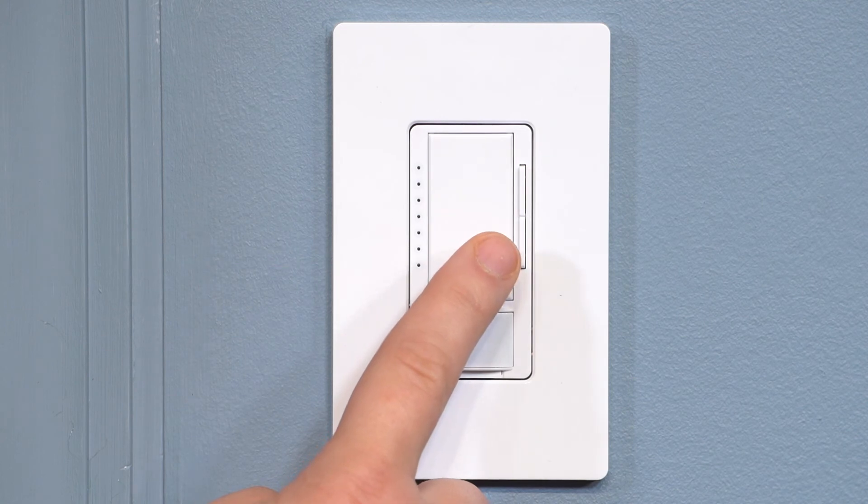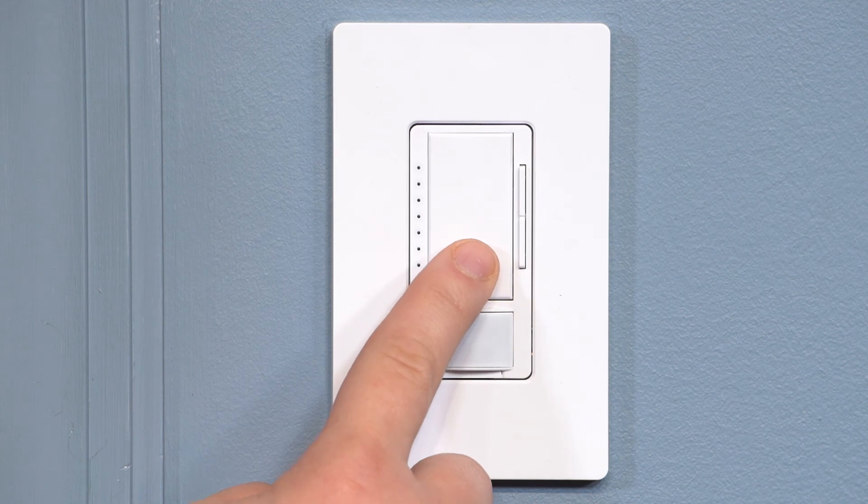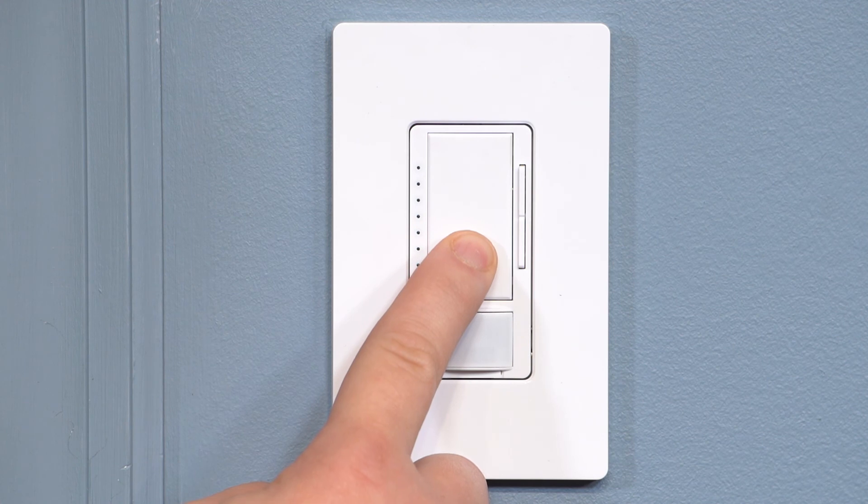This will take you back out to the main sensor menu. To exit the main sensor menu, you can press and hold the tap button until the indicator lights stop blinking, or pull the service switch out and push it back in.